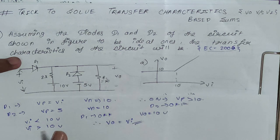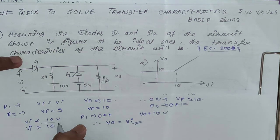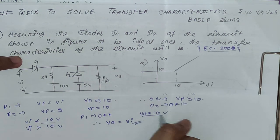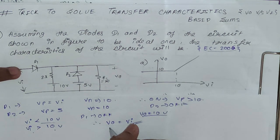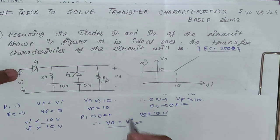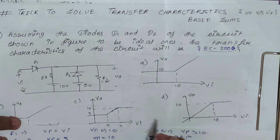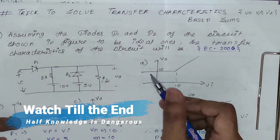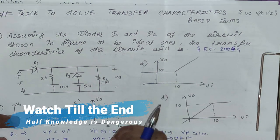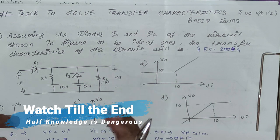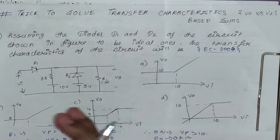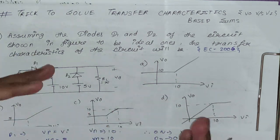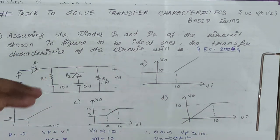For Vi less than 10 V, we have Vo equals 10 V, and for Vi greater than 10 V, we have Vo equals Vi. From the options you can see this is the correct option. So first let's see what is the difference between our trick and the traditional way.